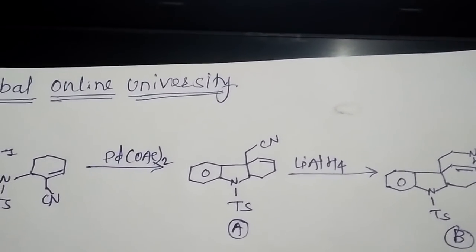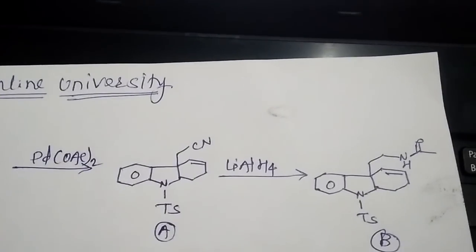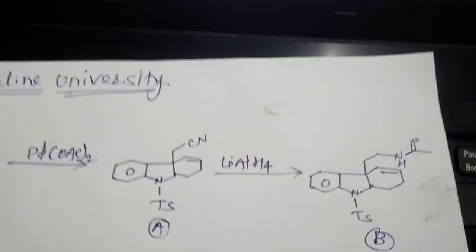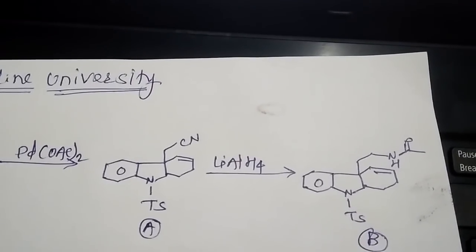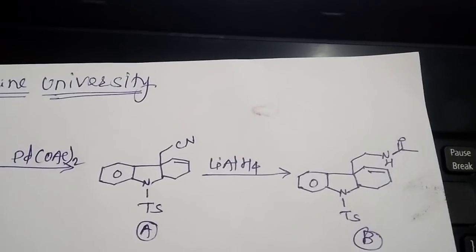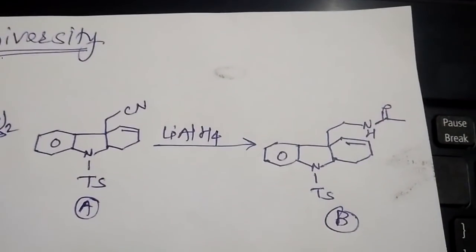Then reduction of cyanide to give us amine, and then they have given acetic anhydride also to oscillate the nitrogen. So this will be the correct answer. First A and B, they were asking questions like in the question paper.